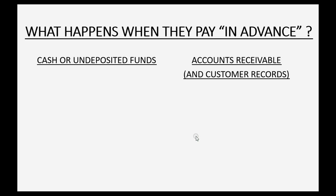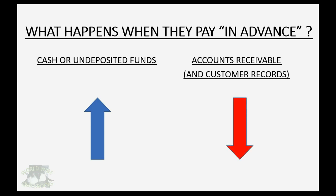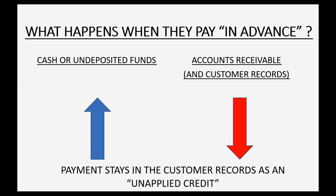So what happens when the customer pays in advance? Cash or undeposited funds must increase because you just received money from a customer. And when you receive money from a customer, accounts receivable and the customer records go down. This means if it's a new customer and this is their first transaction, they will actually have a negative balance, and that indicates that you actually owe them until the service is rendered. The payment stays in the customer records as an unapplied credit until you actually do the job and earn the income.